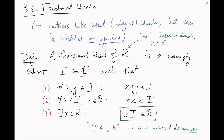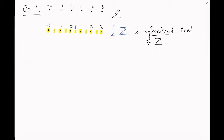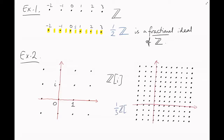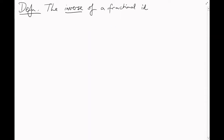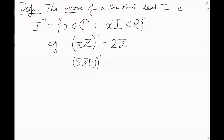Here are a couple of examples of non-integral fractional ideals. Example 1: one-half times Z is a fractional ideal of Z — multiplying any element here by 2 gives you an integer. Example 2: one-third times Z[i] — same story, the denominator is 3. I'm going to tentatively define the inverse of a fractional ideal. If I is a fractional ideal, its inverse I^(−1) is the set of all complex numbers x such that x times I is a subset of the ring R. So for example, the inverse of (1/2)Z is 2Z, and the inverse of 5Z[i] is (1/5)Z[i].